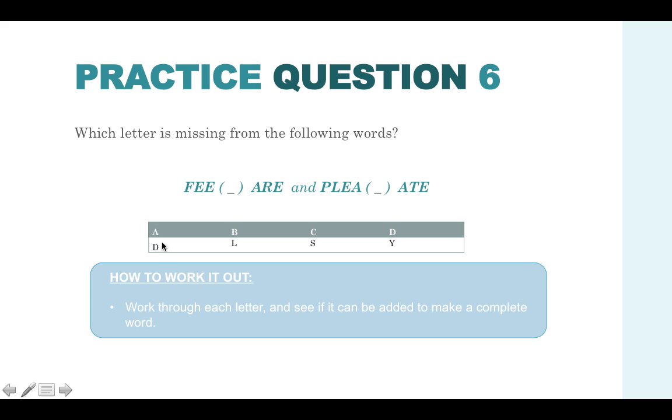Let's see if answer A works. So let's use D. We've got feed, dare, plead and date. So all of those work. But let's just double check that the other ones are actually incorrect. We've got fill, leer, which doesn't really make sense. Pleal and late. So these two don't work with that letter there. Then we've got fees, ser, which again it doesn't really make sense. Pleas, which would be spelt incorrectly because it would be an E on the end as well. And sate. So you know that that's not going to be right. And then free, so that doesn't work. Yeah, again that doesn't work. Plea, again doesn't work. And yeah, again you know that the actual answer is A, which is the letter D.